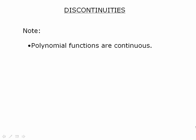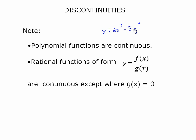A few things to keep in mind. Polynomial functions are continuous — for example, y = 2x³ − 5x² has no gaps in the graph, is defined for all real numbers, has no denominators, and no square roots or radicals. It's continuous. Rational functions — one polynomial divided by another — are also continuous except where g(x) = 0.